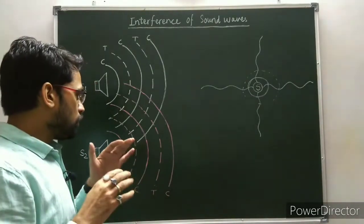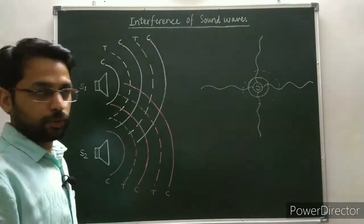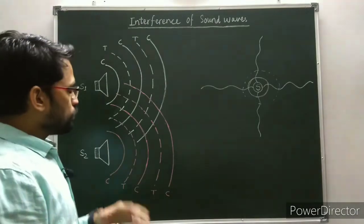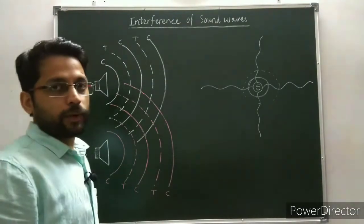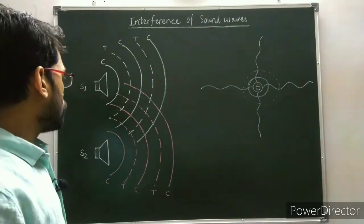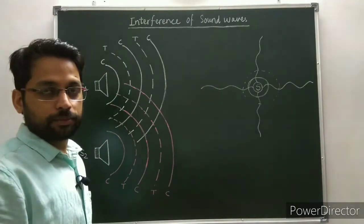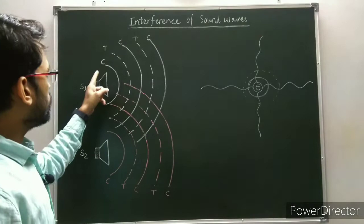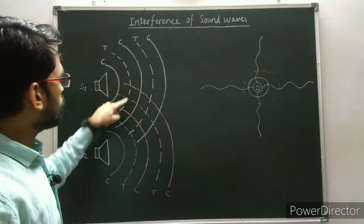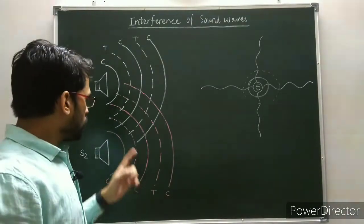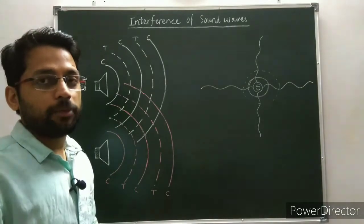When two or more waves propagate in the same direction in a medium, they superimpose on each other. Due to the superposition, the intensity at some points becomes maximum and at some other points becomes minimum. When two waves superpose in the same phase — meaning the crest of one wave is superimposed over the crest of the other, or the trough of one wave is superposed over the trough of the other — then at those points we get constructive interference or maximum intensity of sound.